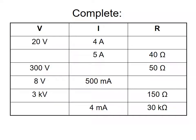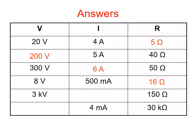Now copy and complete the table: 20V ÷ 4A = 5 ohms. 5A × 40Ω = 200 volts. 300V ÷ 50A = 6 amps. 8V ÷ 500mA (0.5A) = 16 ohms. 3000V ÷ 20A = 150 ohms. And 4mA × 30Ω = 120 volts. Hopefully everyone got 100%.